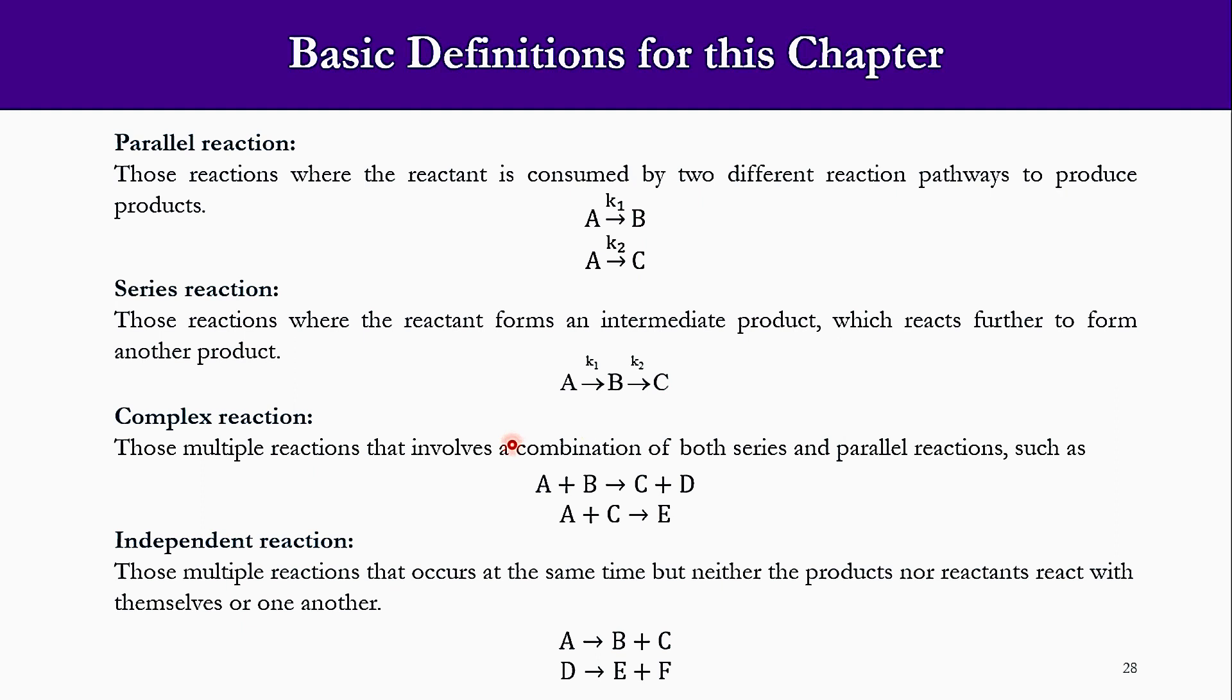In complex reaction, we can say it is a combination of series and parallel reactions. Like you can say that A and B react to produce C and D, and then that A reacts with C to produce E. The parallel and the series aspects both are covered in it.